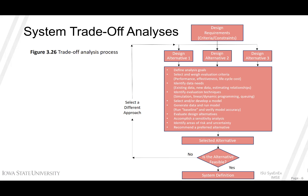Let's look at this in more detail regarding the Blanchard-Fabrickey process, illustrated in Figure 3.26. You would tailor and apply it to any point within the life cycle. The depth of the analysis and evaluation effort will vary depending on the nature of the problem. At the very top, you start with the design requirements, criteria, or constraints, then evaluate three different design alternatives. From there, you use the steps discussed to select your alternative. If the alternative is feasible, you continue on to your system definition; if not, you go back and re-evaluate those potential alternatives.